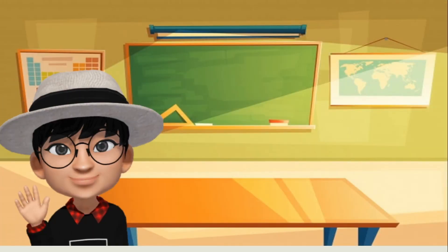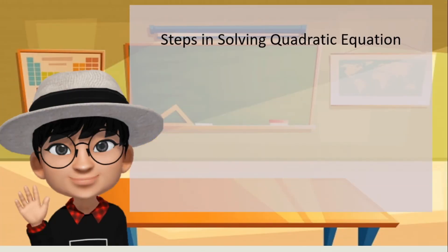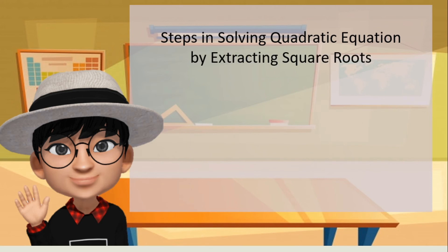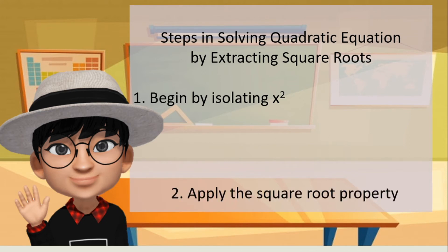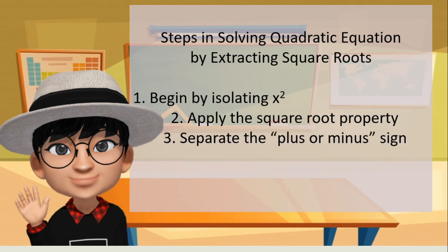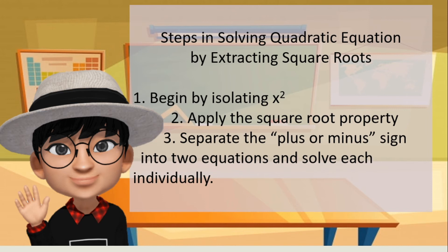There are three steps in solving quadratic equations by extracting square roots. Number one, we begin by isolating the quadratic term or x squared. Two, we apply the square root property. And number three, we separate the plus or minus sign into two equations and solve each individually.